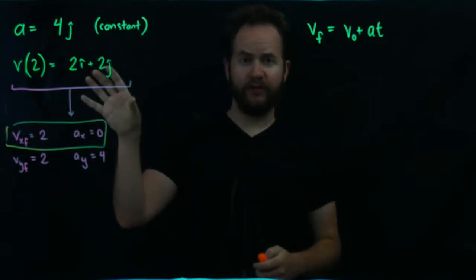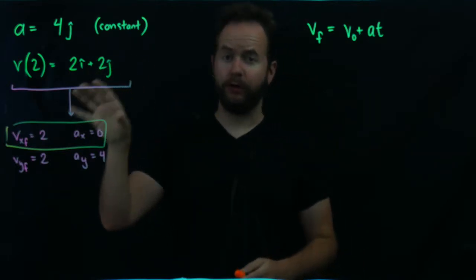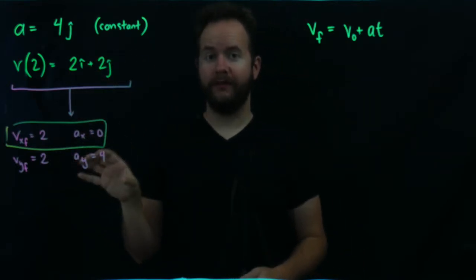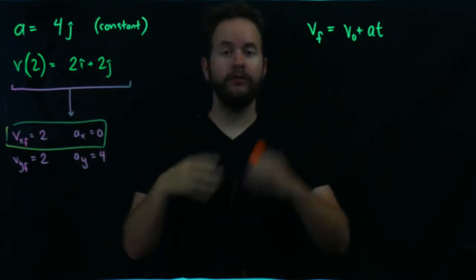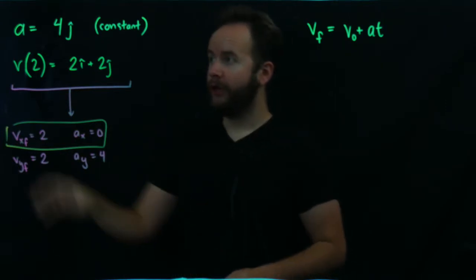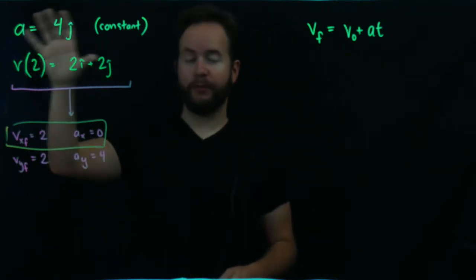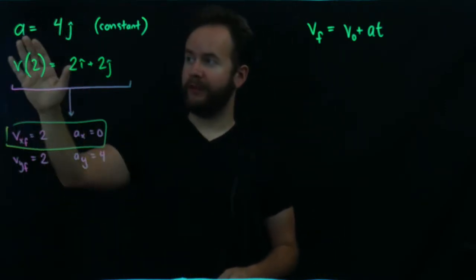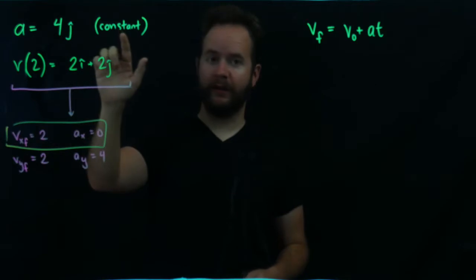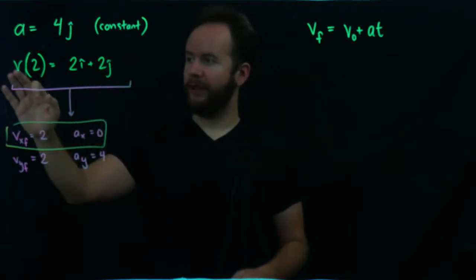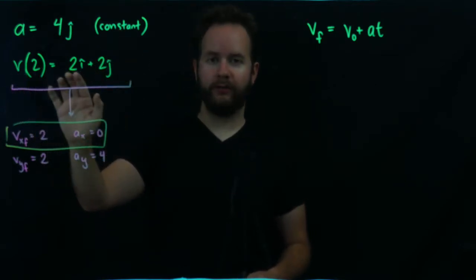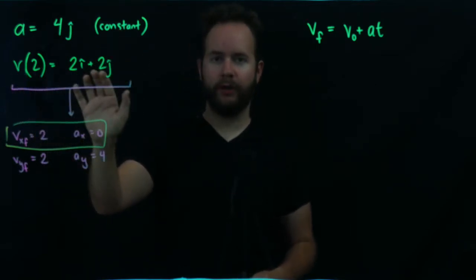For this problem we're given some information about a particle and our job is to figure out what the initial velocity of that particle is using some kinematic equations. We're told the acceleration in the y direction is 4 and that's constant. The velocity after 2 seconds is 2 in the x direction and 2 in the y direction.